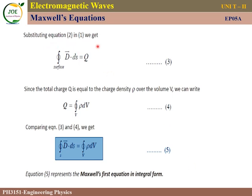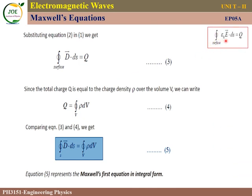Now we have two equations. The first equation is: surface integral of epsilon naught E dot dS equals Q. The second equation is D vector equals epsilon naught into E. We substitute epsilon naught E in place of D vector. Then the surface integral of D dot dS equals Q. This is the third equation.